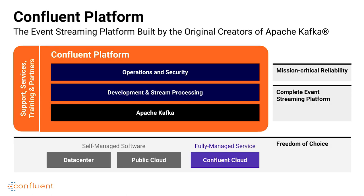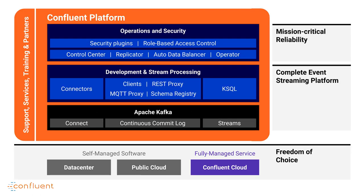So what does Confluent offer? We've created the enterprise distribution of Kafka. We make Kafka successful in your organization by adding clients for all your programming languages, connectors for all your existing systems, a SQL layer, and operational features to make Kafka a production-ready system that can run across data centers and scale elastically, as well as tools to help you manage and monitor it. We offer this platform wherever your applications are — either as a software product you can run in your data center, or as a fully managed service in the public cloud.